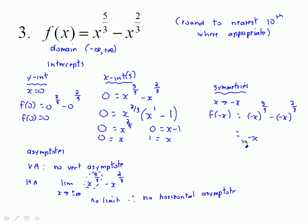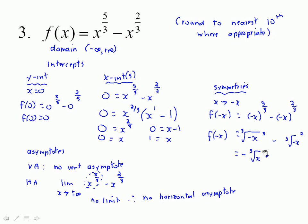It helps to write this as: the cube root of negative x raised to the fifth, minus the cube root of negative x squared, and then try to see what's going on. The cube root of negative x is a negative number; raise it to the fifth, it's still negative, so the negative can be taken out, giving the cube root of x to the fifth. For the second term, the cube root of a negative squared becomes positive.